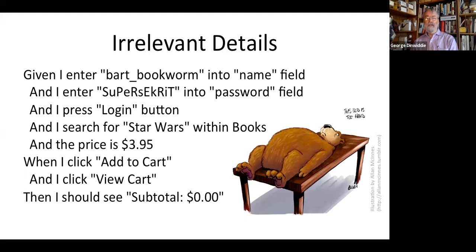If you look at a scenario like this, which of these details matter? It's really hard to tell, isn't it? Does this communicate the intent of what you're doing? There's a whole lot of stuff about logging in and searching and adding to cart. And then we're just checking that the subtotal is zero. What does that mean?